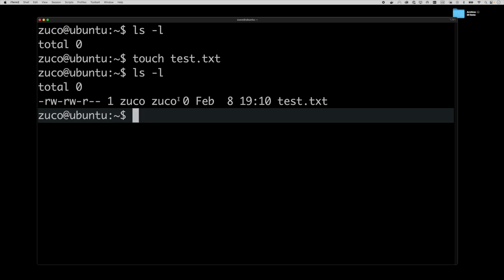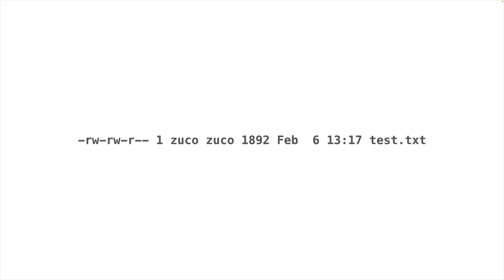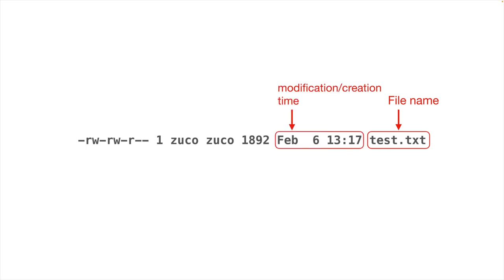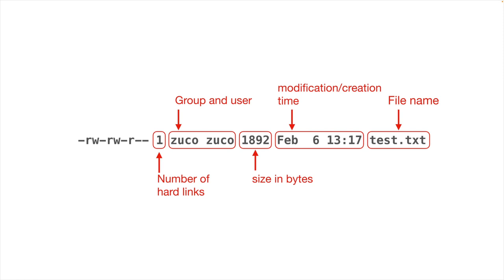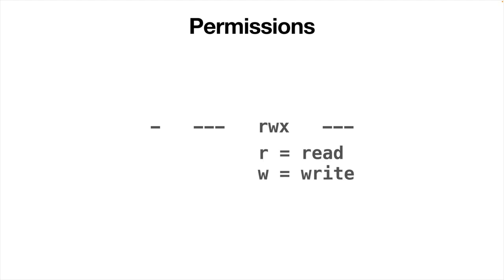Let's analyze this line here — what all this means. The first element in this table is the name of the file. Then the next one is the modification or creation time of that file. Next we have the size in bytes, then the group and user, number of hard links, and finally the permissions, which is what we are going to focus on right now. Permissions are divided in three columns, each containing four elements: R for read, W for write, X for execute, and a hyphen meaning no permissions at all.